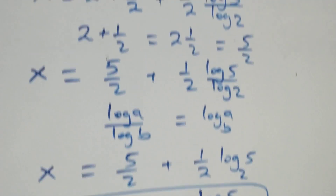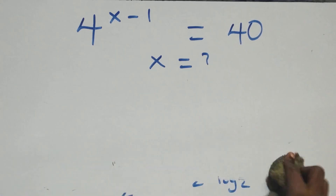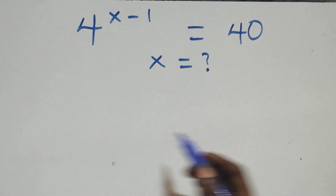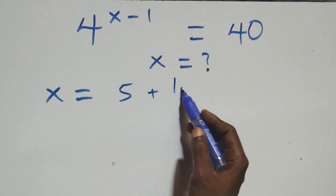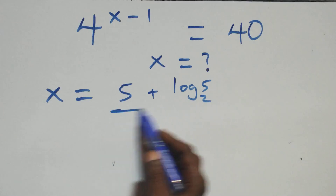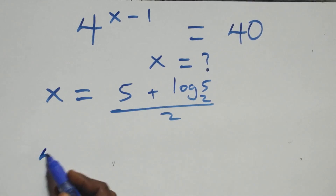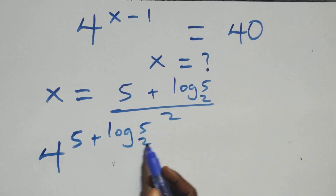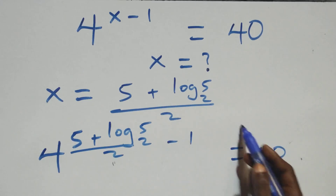Let's check if this satisfies the given problem. We substitute x equals (5 + log₂5)/2 back in, giving us 4 raised to power (5 + log₂5)/2 minus 1. Bringing the power together as one, with 1 written as 2/2, we get 4 raised to power (5 + log₂5 − 2) over 2.